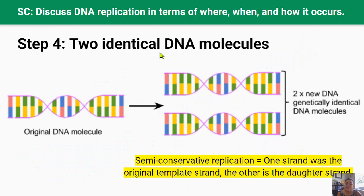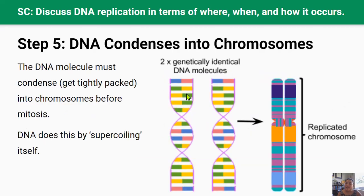Step four: two identical DNA molecules are formed. DNA replication in both leading and lagging strands continues until two new molecules of DNA are produced. Each resulting DNA molecule has one strand from the original molecule — the template strand — and the other strand is the new daughter strand. This is called semi-conservative replication because each DNA molecule formed has one parent strand and one daughter strand. Step five: DNA condenses into chromosomes as it prepares for cell division. Prior to the cell dividing, the two identical copies of the DNA molecule coil and super-coil to form replicated chromosomes, so that each new daughter cell will only have one copy of each chromosome and they'll be genetically identical.